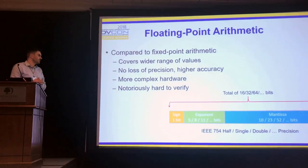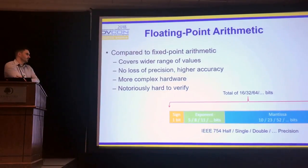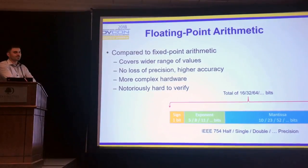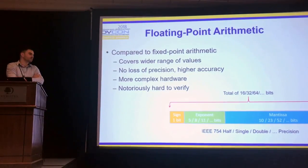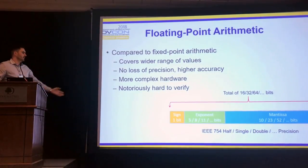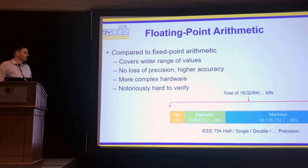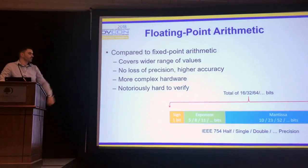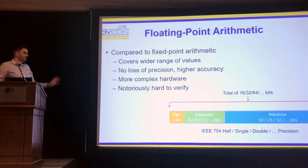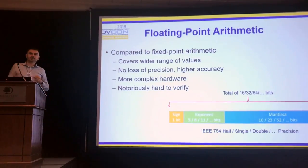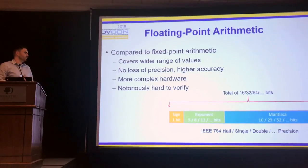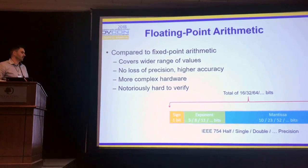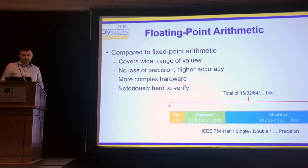Below you can see an example of the IEEE 754 standard, which defines all the floating point specification and how the number description looks. We have different precisions and different parts of the number itself: the sign, the exponent, and the mantissa, which together determine and define a number.